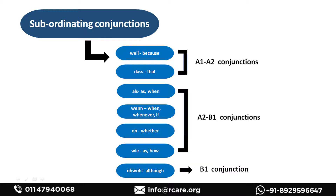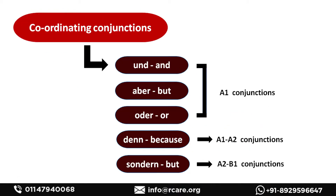The first two conjunctions are generally used in A1 and A2, while the rest are used in A2 and B1, and the last conjunction is only introduced in B1. Now we come to coordinating conjunctions, which are: und (and), aber (but), oder (or), dann (then), denn (because), and sondern (but rather). We will have lots of examples later in this video.